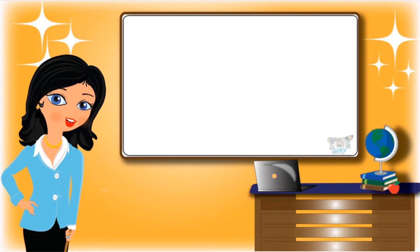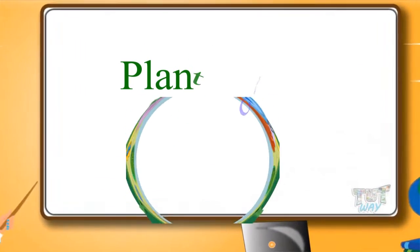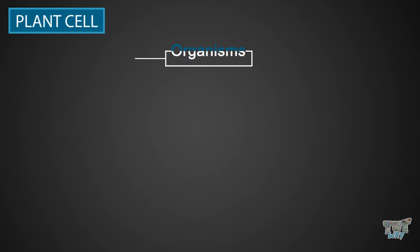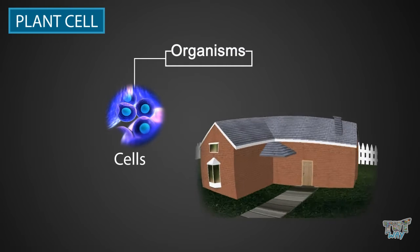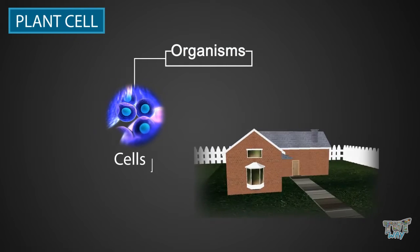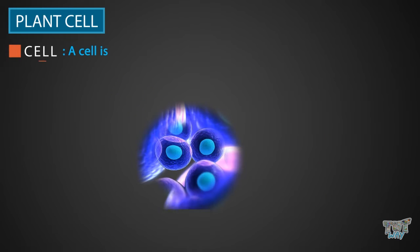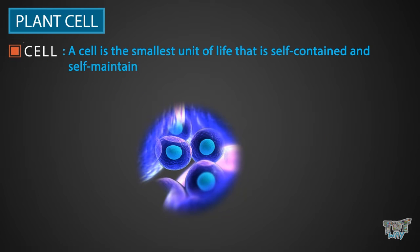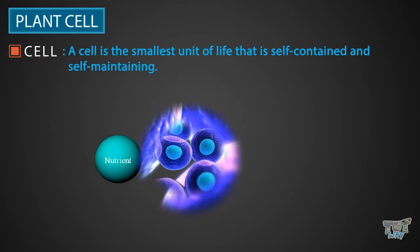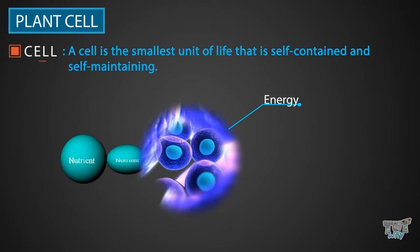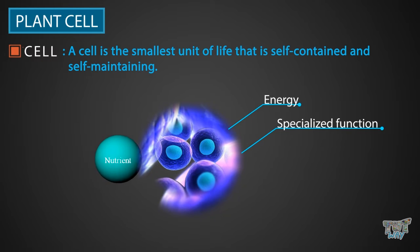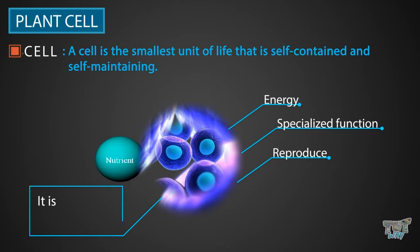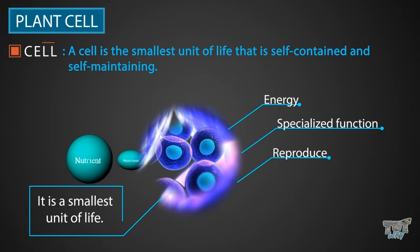Hi friends, today we will learn about plant cells, so let's start. We know all organisms are made up of cells, like a house is made up of bricks. The cell is the smallest unit of life that is self-contained and self-maintaining. It can take in nutrients and convert these nutrients into energy, carry out specialized functions, and can also reproduce. So, it is the smallest unit of life.